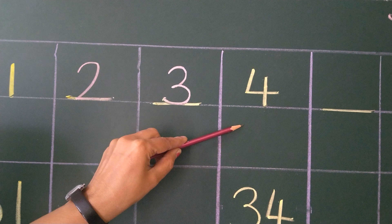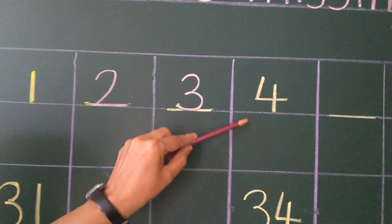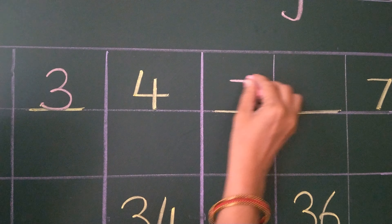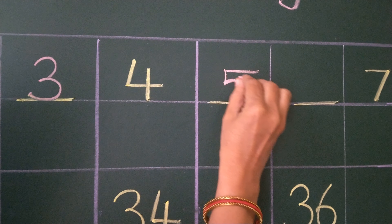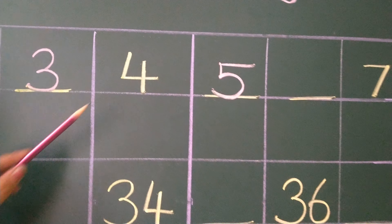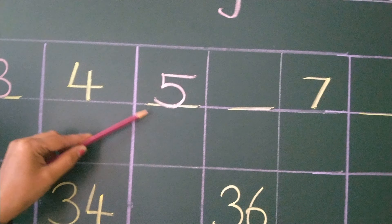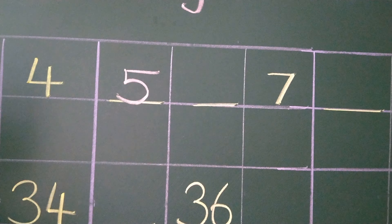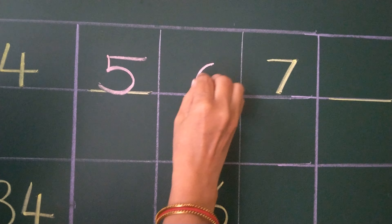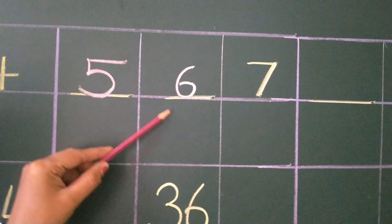The next number is 4. After 4, which number comes? 5. So we have to write here 5. 4, 5. After 5, which number comes? 6. So we have to write here 6. 5, 6.